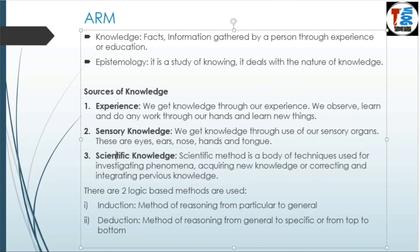The third form is scientific knowledge. Scientific knowledge is a body of techniques used to investigate phenomena, acquire new knowledge, or correct and integrate previous knowledge. The scientific method gives us empirical and measurable results which can be tested and verified again and again. Scientific method is based on logic — a system of reasoning which helps in choosing the right option from many options. In logic, two basic methods are used: induction and deduction.